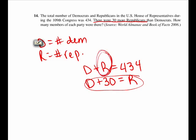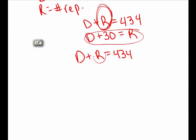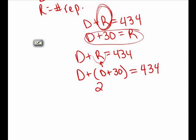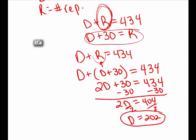Wherever I see an R, I replace it with D plus 30. In the first equation, D plus R equals 434 becomes D plus (D plus 30) equals 434. Solving: 2D plus 30 equals 434, subtract 30 on both sides giving 2D equals 404, and dividing by 2 gives D equals 202. There were 202 Democrats.